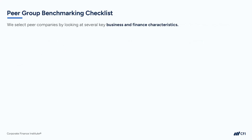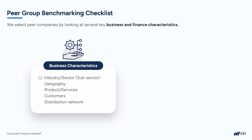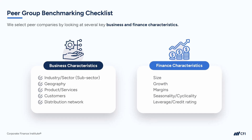Here we have a best practice peer group benchmarking checklist. First, look at peer business characteristics: are the two companies in the same industry or sector? Do they have similar geographies, similar products and services, similar customer types, and similar distribution networks? We also want to find peers with common financial characteristics: similar size in terms of revenue, similar growth, similar margins — gross margins, EBITDA margins and so on — similar seasonality or cyclicality, and similar leverage or credit ratings. All these things make up a good benchmarking checklist.